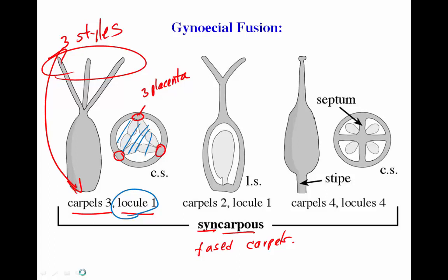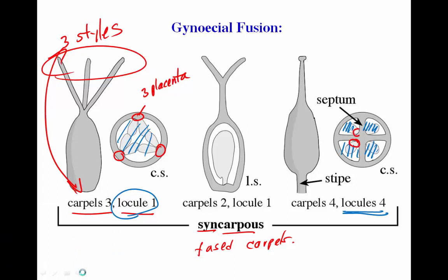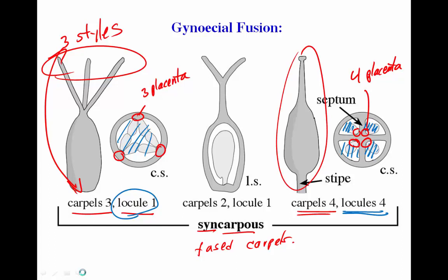Looking at the far right of the diagram, we see immediately in cross section that there are four locules — four small spaces. There are also four placentas — four places where ovules are attached — telling us there are four carpels. From the outside, we just see a single gynoecium. In cases like this we have to cut a cross section with a razor blade to see what's inside.